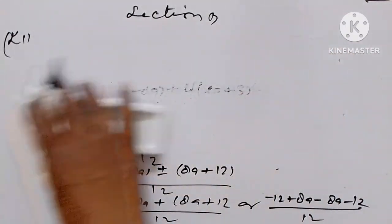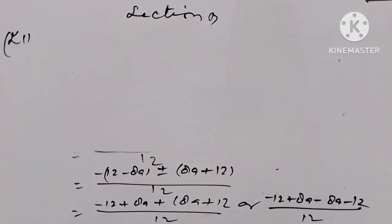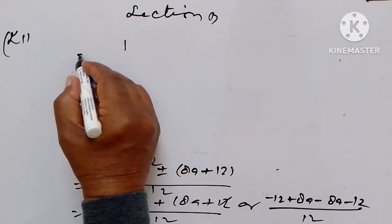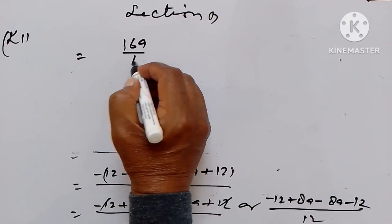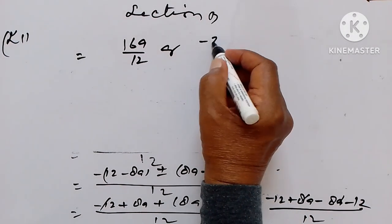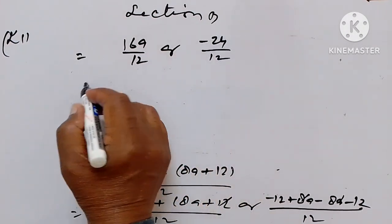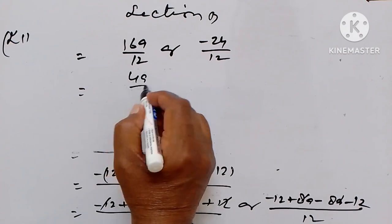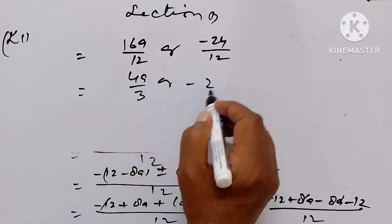This can be further solved. The terms cancel: 8a plus 8a is 16a upon 12, or 8a and 8a cancel giving minus 24 upon 12. This equals 4a upon 3, or minus 2.